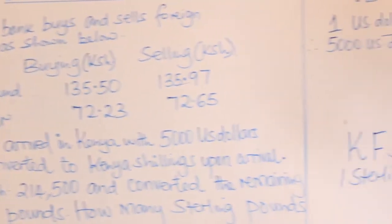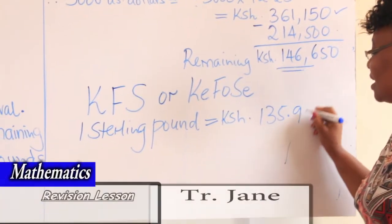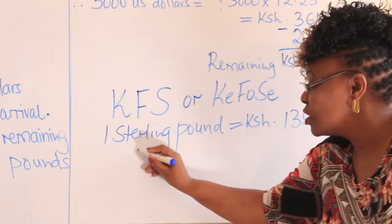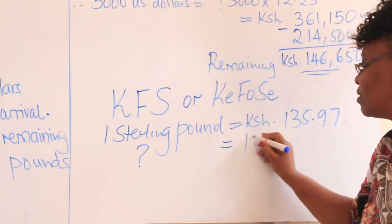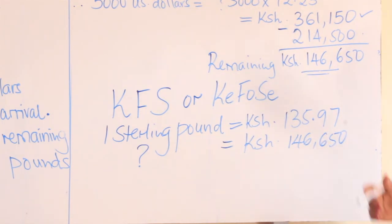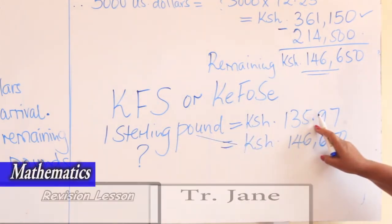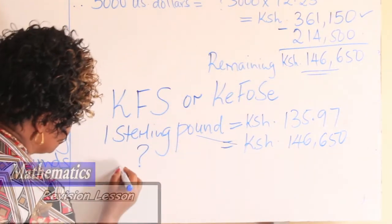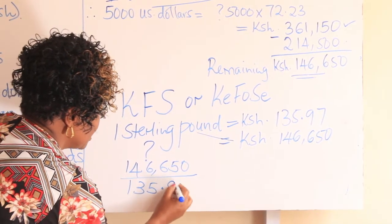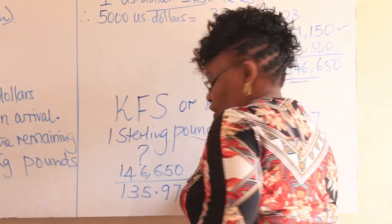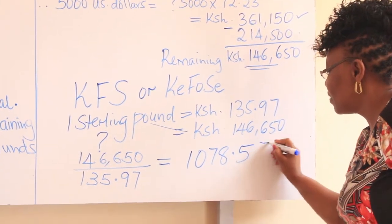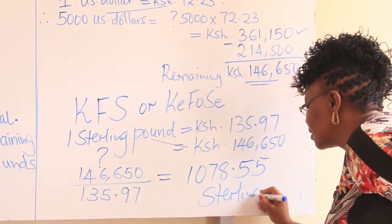Now, what is Kenya shillings 146,650 equivalent to in sterling pounds? You cross-multiply and divide by 135.97: 146,650 divided by 135.97. If you work this out, you get approximately 1,078.55 sterling pounds.